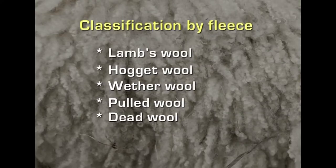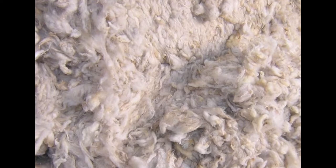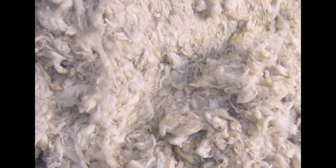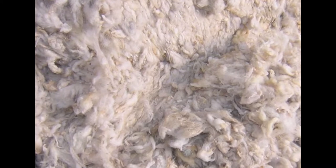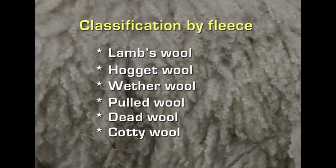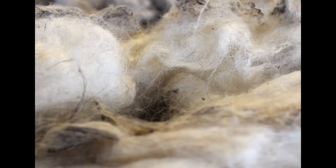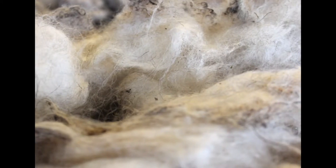Next is dead wool, because sometimes when sheep are on the range, they die or meet with accidents. Wool collected from such animals is called dead wool, and it is of very inferior grade, used only for low-grade fabrics. The next variety is cotty wool, which is similar to cotton because it is brittle and hard. This happens because the animals are malnourished and proper weather conditions were not existing for them, resulting in wool resembling cotton.